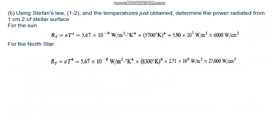Part b: Using Stefan's law and the temperatures just obtained, determine the power radiated from the stellar surface per unit area. For the sun, R_T ≈ 6000 W/cm². For the north star, R_T ≈ 27,000 W/cm².